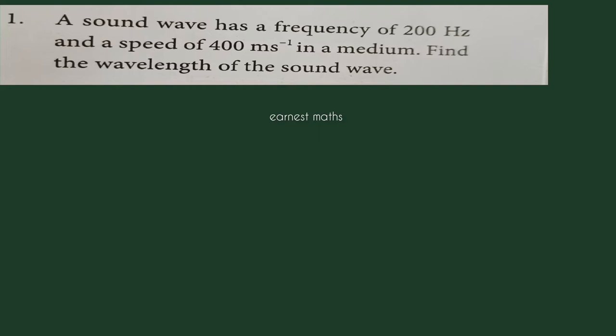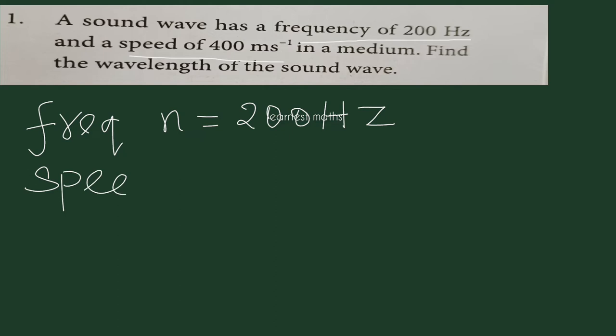First, given data. A sound wave has the frequency of 200 Hertz. What is given? Frequency is given which is represented by N is equal to 200 Hertz. And a speed of 400 meters per second. Speed is given 400 meters per second. Speed represented by V is equal to 400 meters per second.